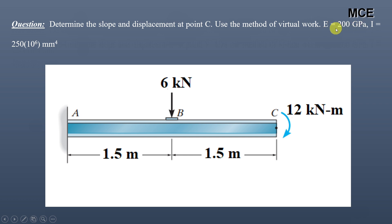The modulus of elasticity for this beam is 200 GPa and the moment of inertia is 250 × 10⁶ mm⁴. This is a cantilever beam of total span 3 meters, fixed at A and free at C. There is a moment of 12 kNm applied at C in the clockwise direction and a concentrated load of 6 kN applied at the midpoint B. We have to find the slope and displacement at point C.